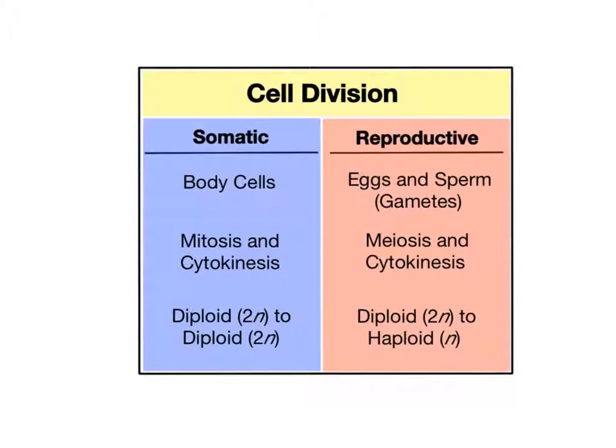Remember that a diploid cell contains the full set of chromosomes, 46 in humans, whereas a haploid cell contains half the number, 23. So if meiosis is dividing diploid cells into haploid cells, mitosis is copying diploid cells into more diploid cells, making identical copies or clones of cells all having the same chromosome number.